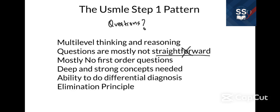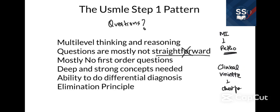A typical question on Step 1 isn't like: 'You have MI — what is the pathophysiology of MI?' That is not how Step 1 works. Step 1 will give you a clinical vignette of a patient presenting with symptoms of MI and will not tell you it's MI. They'll just give the presentation — chest pain, diaphoresis, nausea — and you have to figure out it's MI, then answer the pathophysiology question.